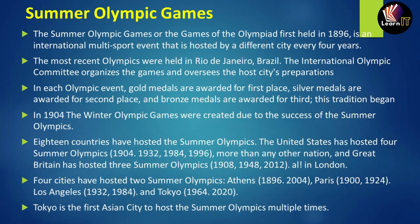About 18 countries have hosted the summer Olympics. The United States has organized it more than any other nation. Britain has hosted three summer Olympic games, all in London. Four cities have hosted two summer Olympics: Athens in 1896 and 2004, Paris in 1900 and 1924, Los Angeles in 1932 and 1984, and Tokyo in 1964 and 2020.